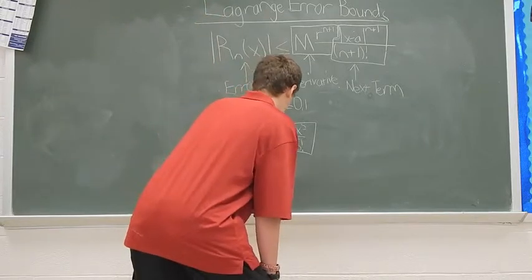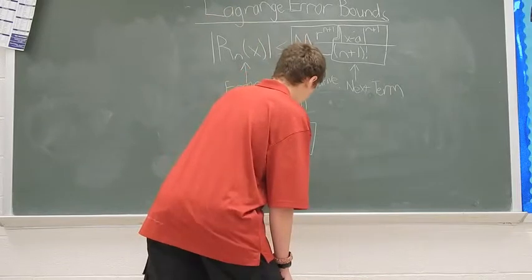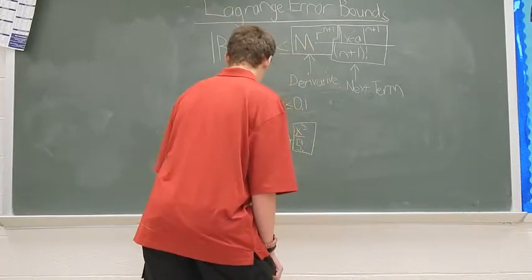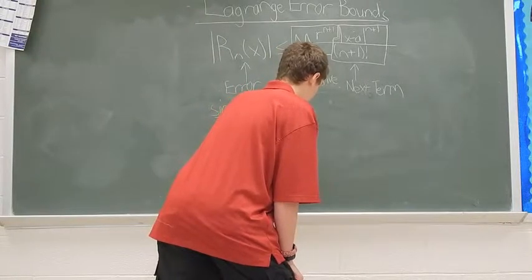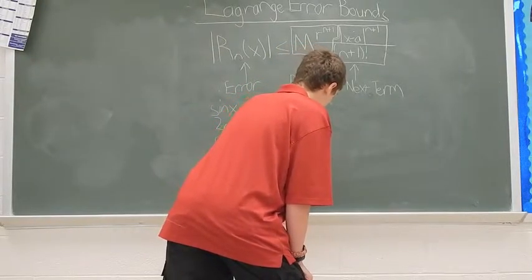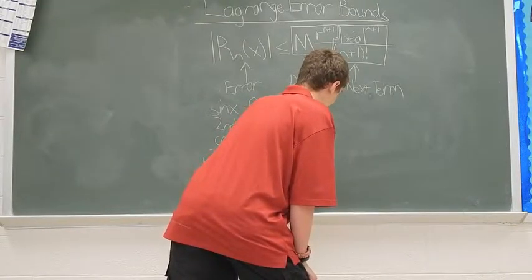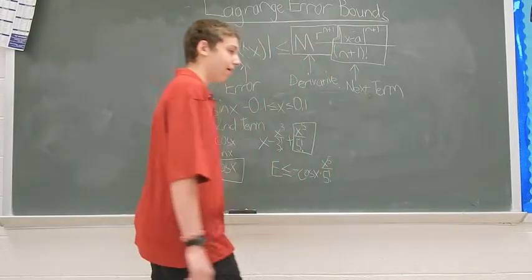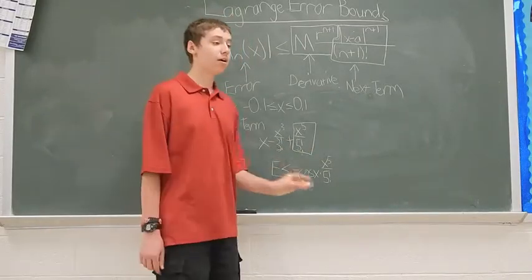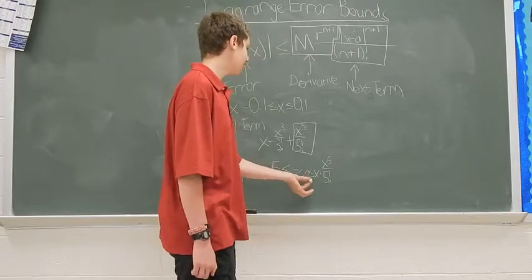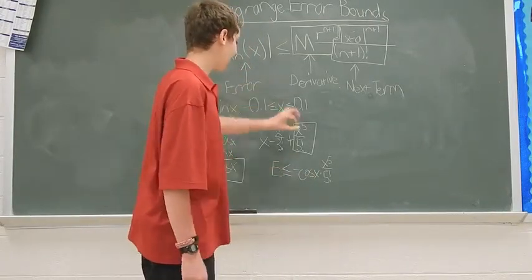So, for your error, and e is the same thing as r sub n of x, this is going to be less than or equal to negative cosine of x times x to the fifth over 5 factorial. Now, these x's have different values. What you need to do is independently find where the value, when you plug it in, is the greatest on this scale.